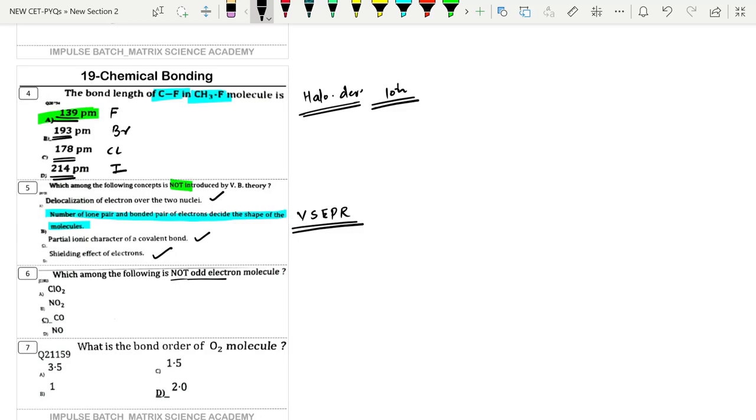Which among the following is not odd electron? ClO2 has 7+6+6 which is odd, NO2 has 5+6+6 which is 17, odd. CH3O has 4+6 which is even, and NO has 5+6 which is 11, odd. So comparing them, the only even one is option C.